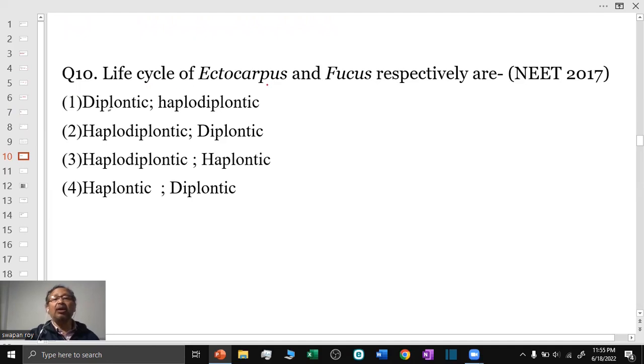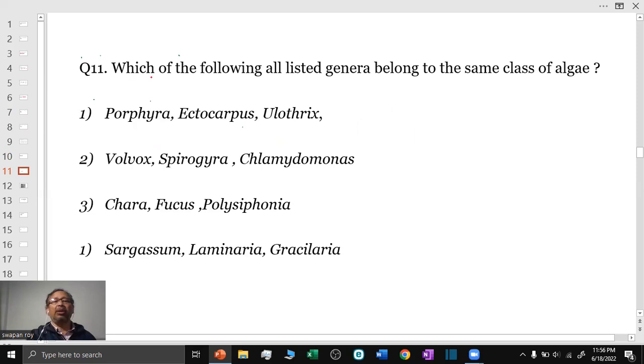Question number 10: Life cycle of Ectocarpus and Fucus respectively are: In Ectocarpus, the life cycle is haplodiplontic and in Fucus, it is diplontic. Option 2 is the answer. Question number 11: Which of the following listed genera belong to the same class of algae? Option is 2: Volvox, Spirogyra, Chlamydomonas. All these 3 are members of Chlorophyceae.